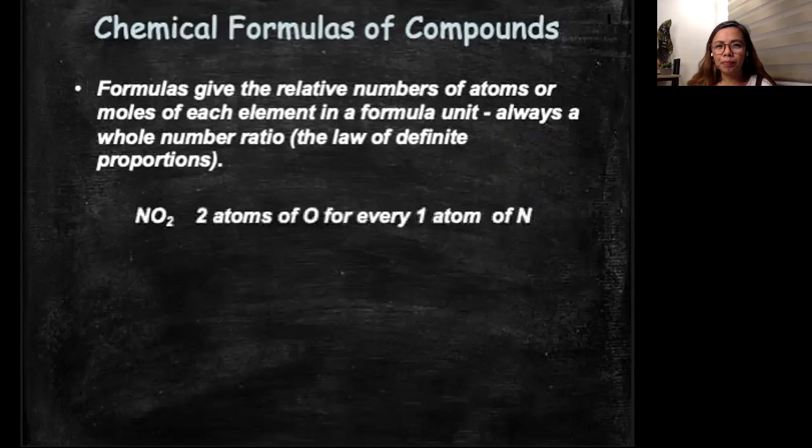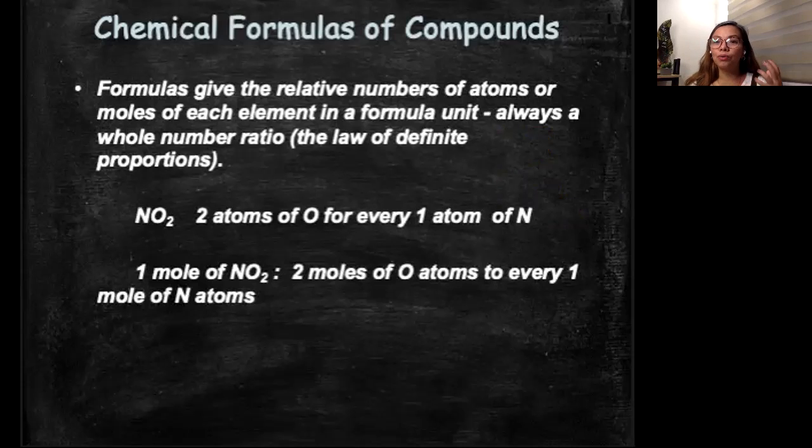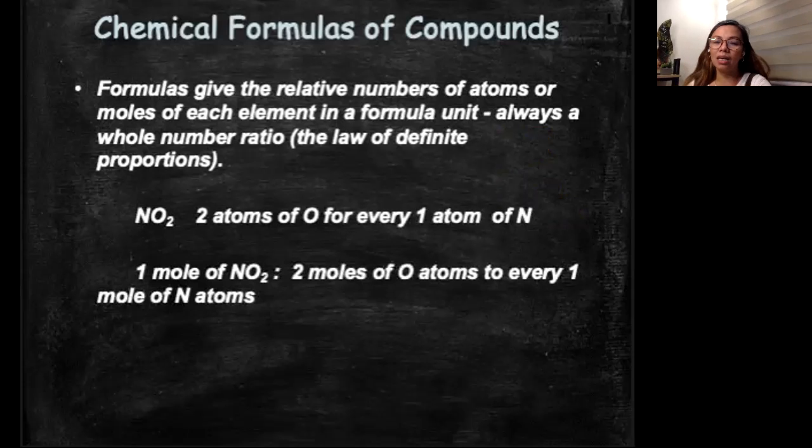Next example, two atoms of oxygen for every one atom of nitrogen. For one mole of nitrogen means two moles of oxygen atoms to every one mole of nitrogen atom. So if we know or can determine the relative number of moles for each element, we can determine a formula for the compound.